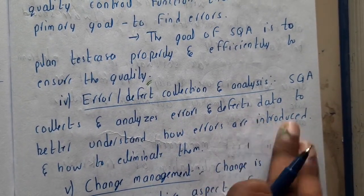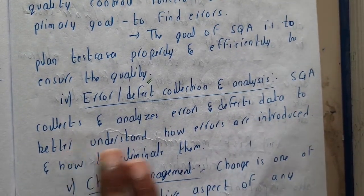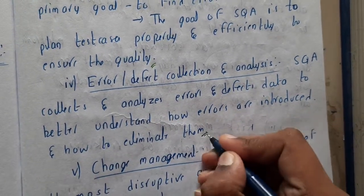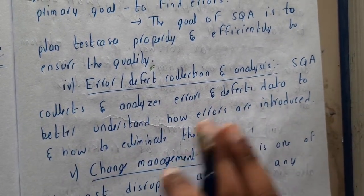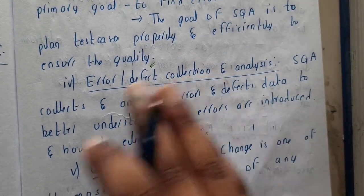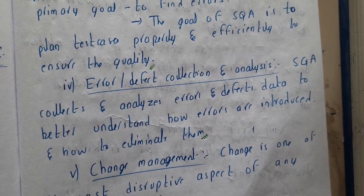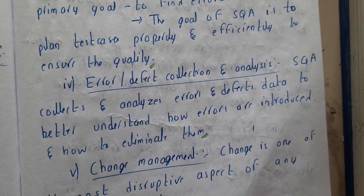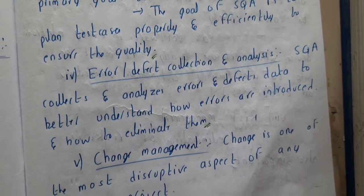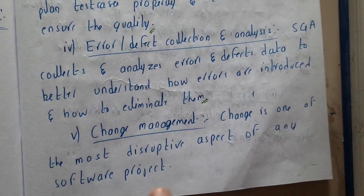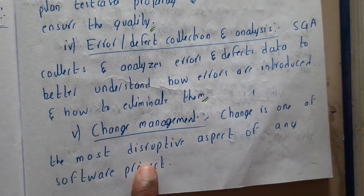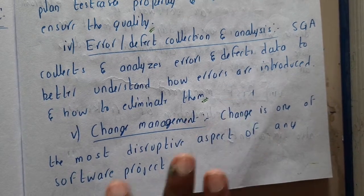Error or defect collection and analysis: SQA collects and analyzes error and defect data to better understand how errors are introduced and how they are eliminated. You do analysis on why and how errors are coming and how you are resolving them, and you make note of everything.